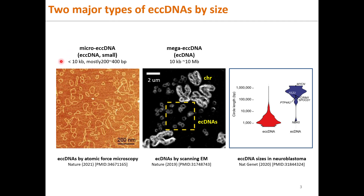The most frequent sizes of micro ECC DNA are between 200 to 400 base pairs. Mega ECC DNA, or simply ECC DNA, are greater than 10 kilobases and can be several megabases long. Here are the violin plots of the size distribution of ECC DNAs in neuroblastoma cancer cells.